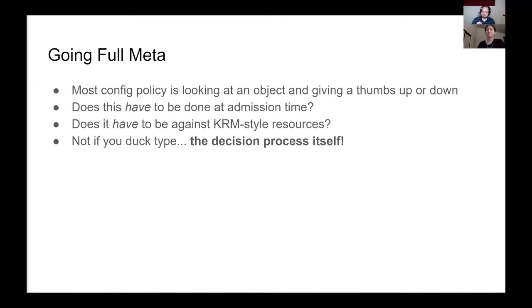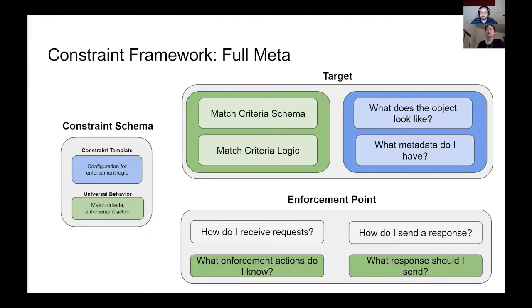This is probably not true if you walk one rung up the abstraction ladder and duck type the decision process itself. So here we have the constraint framework — the library that underlies Gatekeeper. It coordinates all of the duck typing logic we've covered so far. It provides the execution flow Gatekeeper uses to render a decision to the API server. It also provides two abstractions that allow us to define constraint templates and constraints: enforcement points and targets.